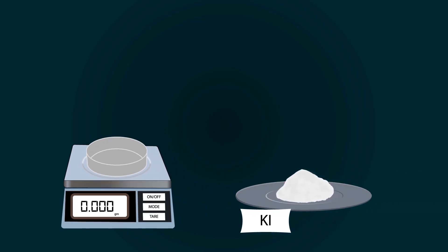Now start adding potassium iodide into the petri dish with the help of spatula. Weigh precisely up to 5 grams.